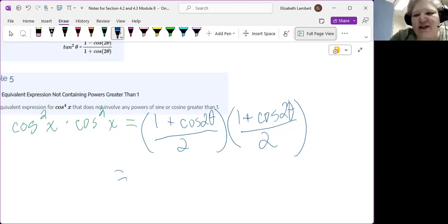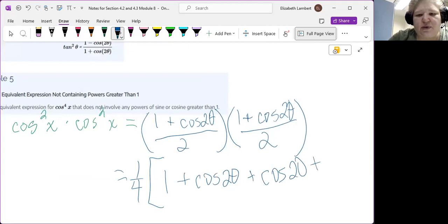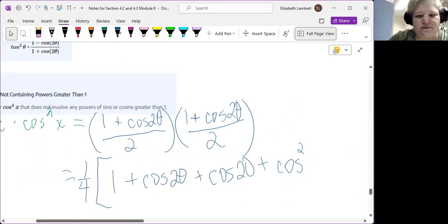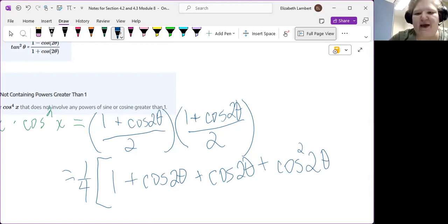So the half and the half I'm just going to write up front as one-fourth, and then I'm just going to put a bracket and just do the 1 plus cosine 2θ times 1 plus cosine 2θ. So that would be 1 plus cosine 2θ plus another cosine 2θ plus cosine squared 2θ. So we're going to have to use it again.